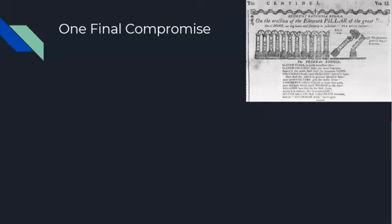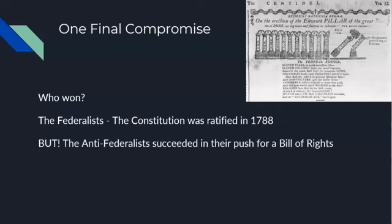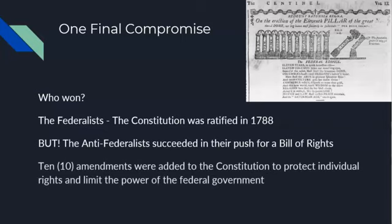The Federalists end up winning this debate, which is why we have the Constitution. However, the biggest reason we care about this debate is because it is how we end up getting the Bill of Rights. As a compromise, they said: if we write a Bill of Rights, will you get on board? Most of the Anti-Federalists agreed, and the Constitution was ratified and went into effect in 1789. Those 10 amendments — called the Bill of Rights — were written to protect individual rights and limit the power of the federal government.